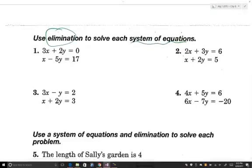So if I'm looking for that, number three here might be a good example to show because if I multiply the top one by two, I get 6x minus 2y equals 4. Be sure to distribute the whole way.